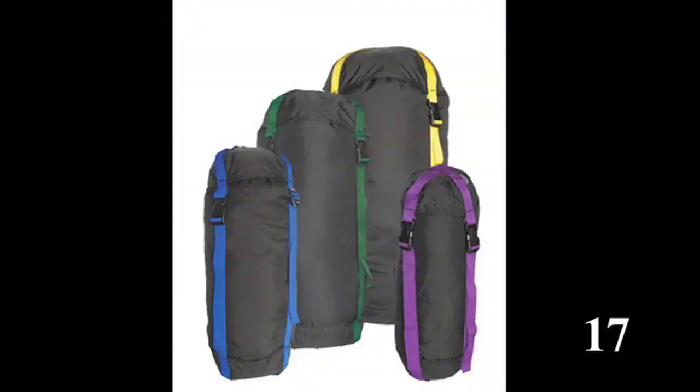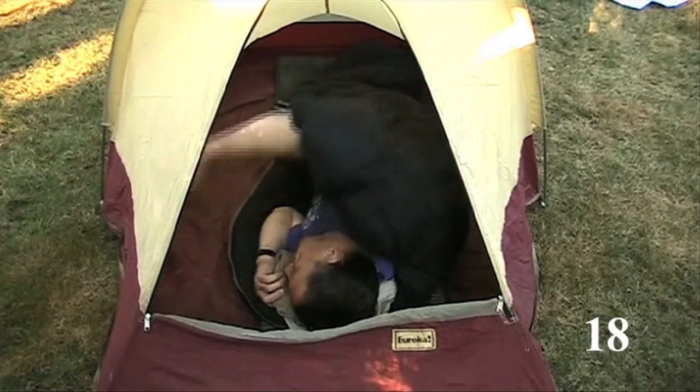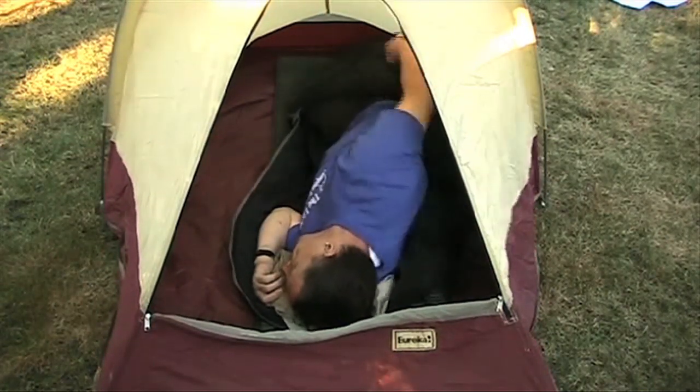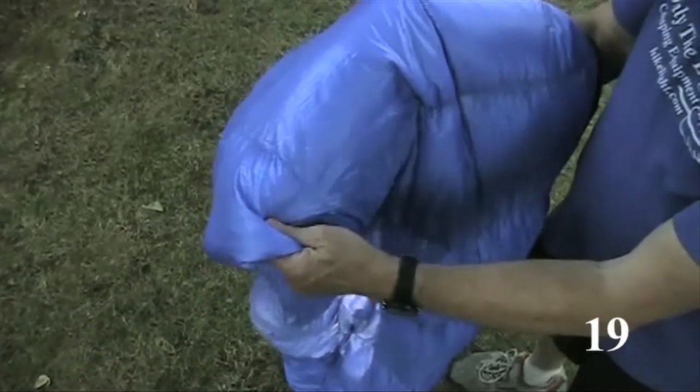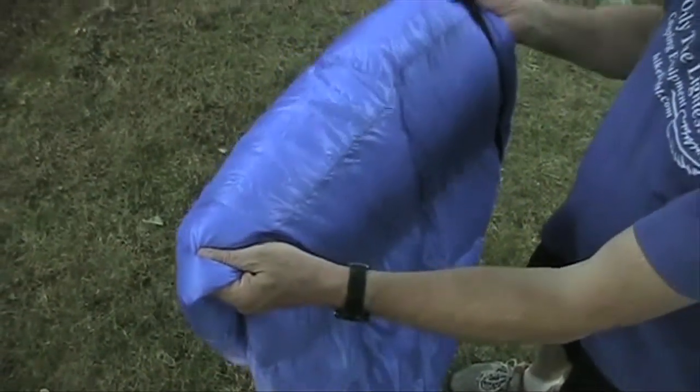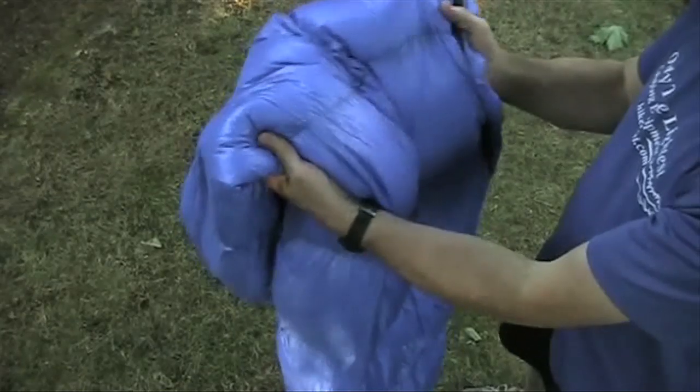Ultralight compression sacks can reduce volume, which might lead to a smaller pack. Buy a sleeping bag that isn't overkill. Many hikers sleep too hot 95% of the time. Use a down bag. It's the most efficient. You'll get skilled at keeping it nice and dry.